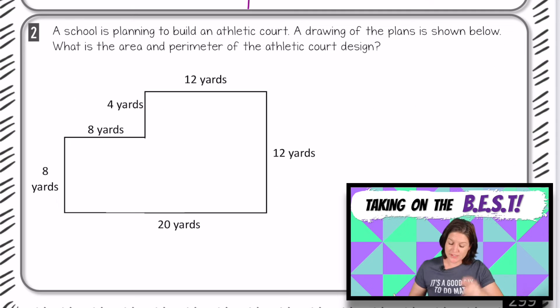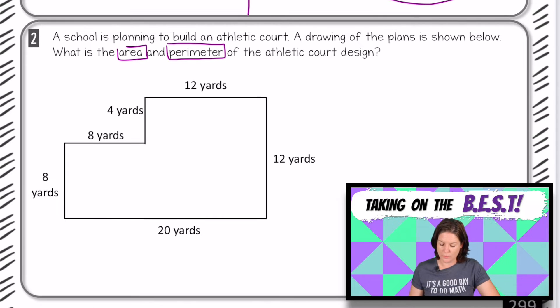All right, so here we are for number 2. It says, a school is planning to build an athletic court. A drawing of the plans is shown below. What is the area and the perimeter of the athletic court design? So this is just putting it into a real-world problem here, an athletic court. Okay, so we need to find the area and the perimeter.